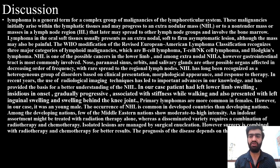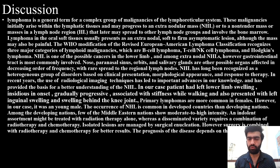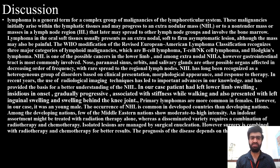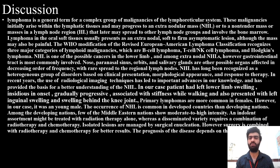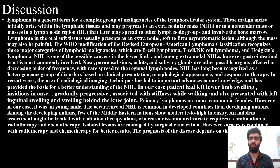Lymphoma is a general term for a complex group of malignancies of the lymphoreticular system. These malignancies initially arise within the lymphatic tissue and may progress to an extranodal mass or a non-tender mass. The WHO modification of the revised lymphoma classification recognizes three major categories of lymphoid malignancies: B cells, T cells, and Hodgkin's lymphoma. Non-Hodgkin's Lymphoma is among the possible cancers of the lower limb; among extranodal NHL, the GIT tract is most commonly involved, followed by the nose, paranasal sinuses, orbits, and salivary glands. In recent years, the use of radiological imaging techniques has led to important advances in understanding Non-Hodgkin's Lymphoma.